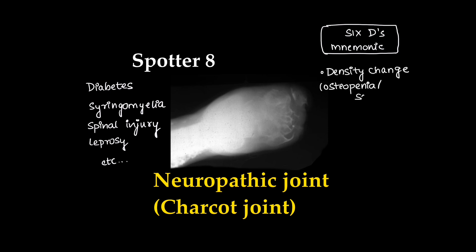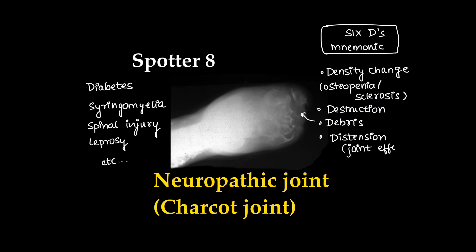The mnemonic 6D for the radiographic changes are: density change (i.e., osteopenia or sclerosis), destruction, debris, distension (nothing but joint effusion), disorganization, and dislocation.